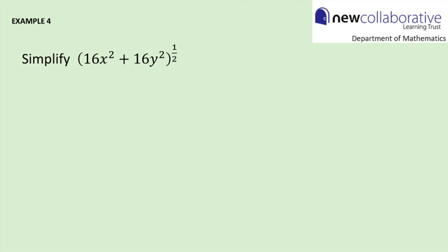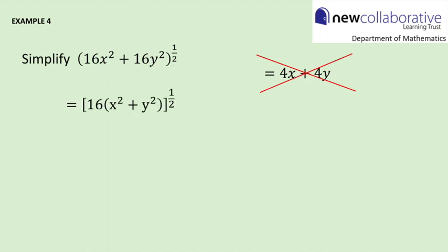Example four addresses a common mistake. We've got 16x squared plus 16y squared, all raised to the power of a half. A common mistake is to think the answer is 4x plus 4y, but that is incorrect. The correct approach: first take a factor of 16 outside the bracket, giving 16 multiplied by x squared plus y squared, all to the power of a half. This becomes 16 to the power of a half multiplied by the bracket x squared plus y squared to the power of a half. Since 16 to the power of a half is 4, we get 4 multiplied by x squared plus y squared to the power of a half, and we cannot simplify further.